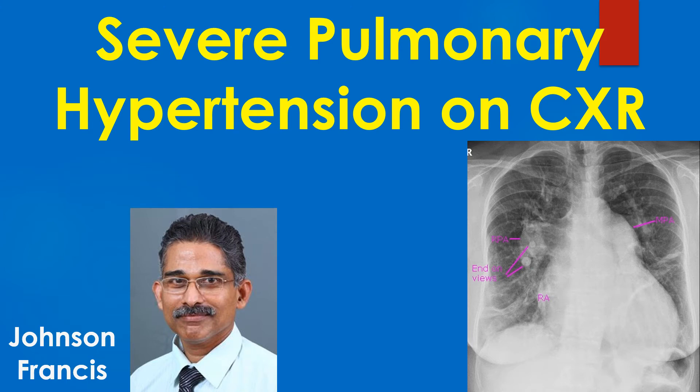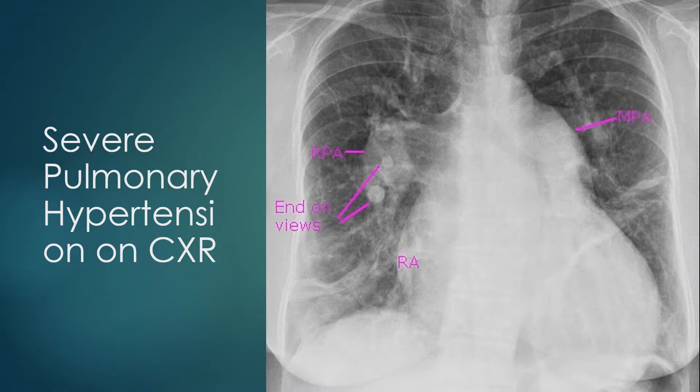Discussion on features of severe pulmonary hypertension on chest X-ray. This is a PA view chest X-ray showing features of severe pulmonary hypertension. There is mild cardiac enlargement with prominence of the right atrial contour, which is extending more to the right than usual.